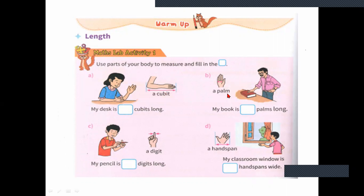Next, a palm. A palm means from here to here — they have marked it. From your small finger to your thumb finger, you can measure. You should fold your three fingers and from your small finger to your thumb finger edge, you have to measure. That is called a hand span. Hand span or palm.